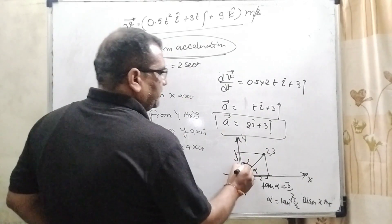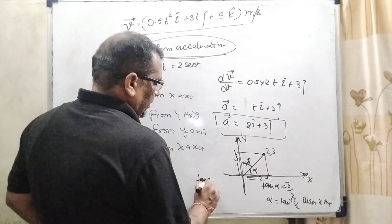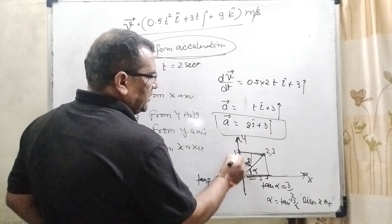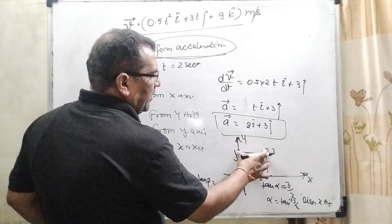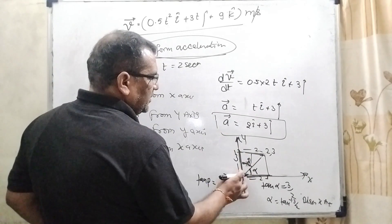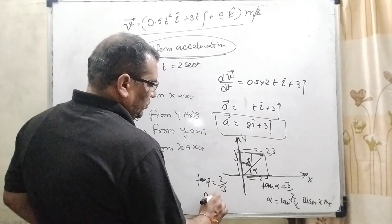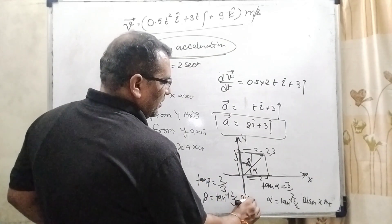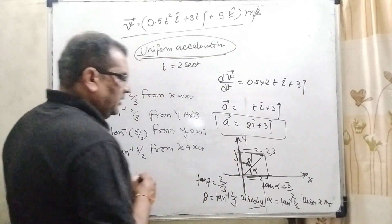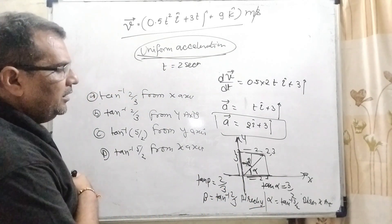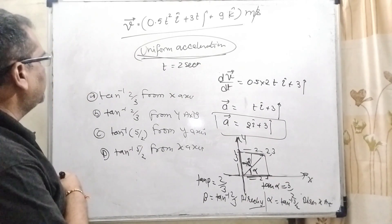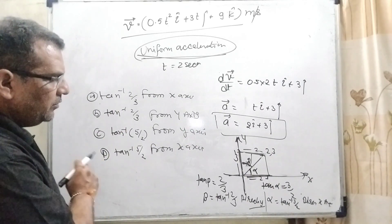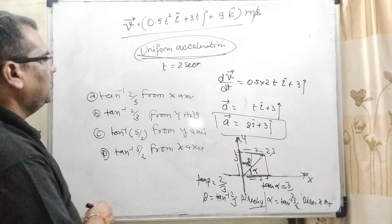And let us again consider this angle given a name beta. Then tan beta, according to this, this line is perpendicular and now this line is considered as the base. So here what is the value of perpendicular, that is 2, and what is the base, that is 3. So beta equal to tan inverse 2 by 3 in the direction of y. Here 3 by 2 is found, and beta equal to tan inverse 2 by 3 in the y-axis.